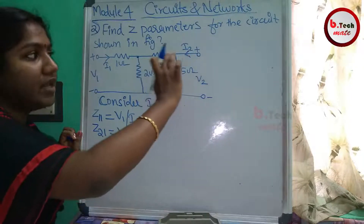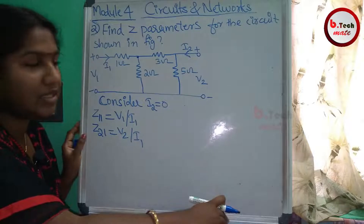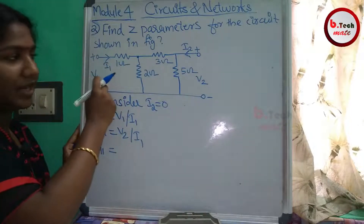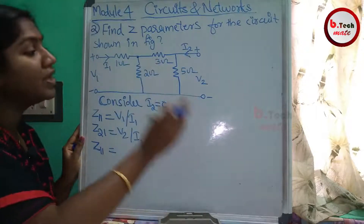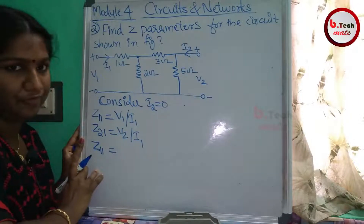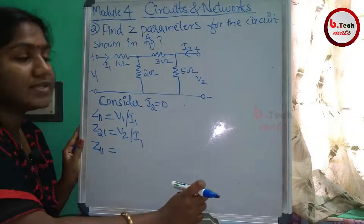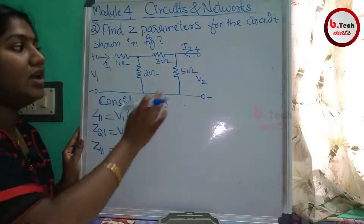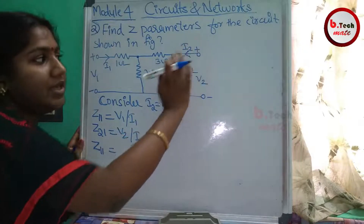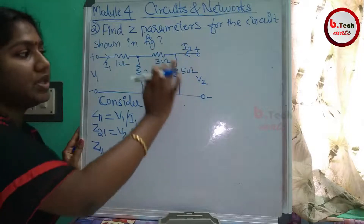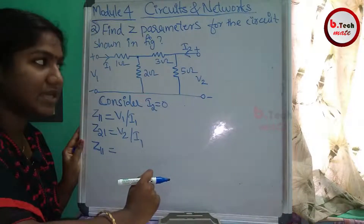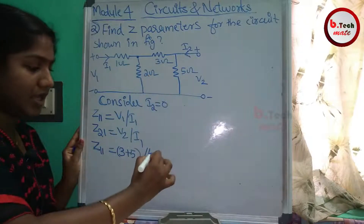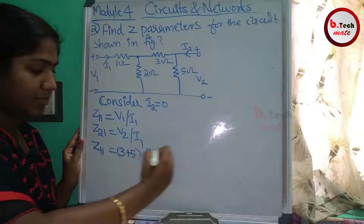Looking at the circuit, we have 3 ohm and 5 ohm resistances. The 3 ohm and 5 ohm are in series, giving 3 plus 5 equals 8 ohm. That 8 ohm combination is then in parallel with another element.